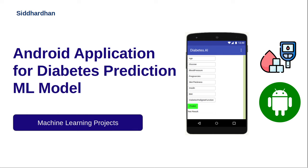Hello everyone, I am Siddharthan. In this video, let's build an Android application that can predict diabetes by using a trained machine learning model. In this application, the user can give in details such as age, glucose, blood pressure, and so on, and predict whether the diabetes result will be positive or negative.